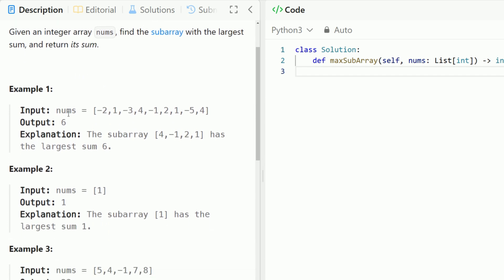If we look at this input array nums over here, the subarray with the maximum sum is actually right here: 4, negative 1, 2, and 1. So 4 minus 1 is 3, 3 plus 2 is 5, 5 plus 1 is 6.